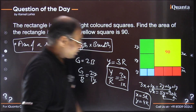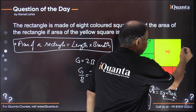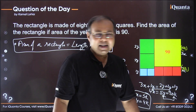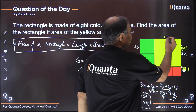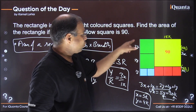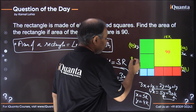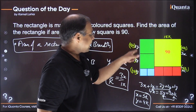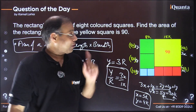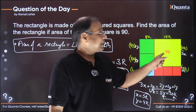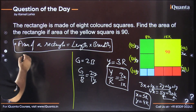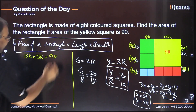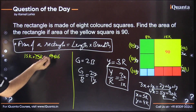With x = 5k, the yellow side = 3 × 5k = 15k, and red side = 5k. The total height is 20k. With y = 4k, the green side = 2 × 4k = 8k, and blue side = 4k. The width of the rectangle is 15k (yellow) + 8k (green) = 23k. Now, the area of the yellow square is 15k × 15k = 90.